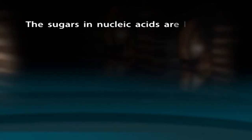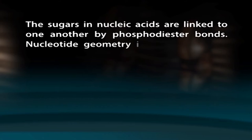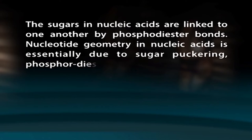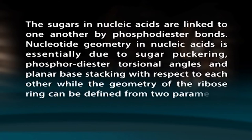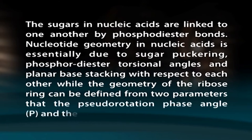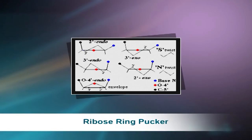The sugars in nucleic acids are linked to one another by phosphodiester bonds. Nucleotide geometry in nucleic acids is essentially due to sugar puckering, phosphodiester torsional angles, and planar base stacking with respect to each other. The geometry of the ribose ring can be defined from two parameters: the pseudo-rotation phase angle (P) and the pucker amplitude. Ring pucker affects the torsional relationships of adjacent CH bonds in the sugar ring. The ribose ring is not planar and usually represents C2-endo (south) or C3-endo (north) conformation. Ribose ring pucker arises because a flat pentagon puts all ring carbon atoms into eclipsed conformations, despite the pentagon angle of 108° being very close to the carbon tetrahedral angle of 109.5°.